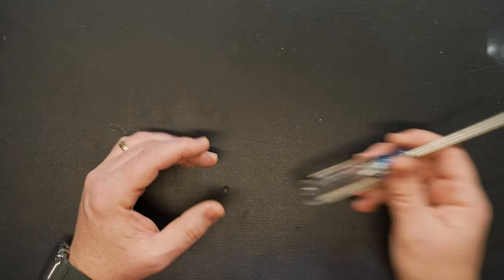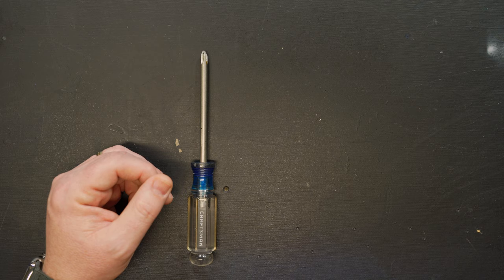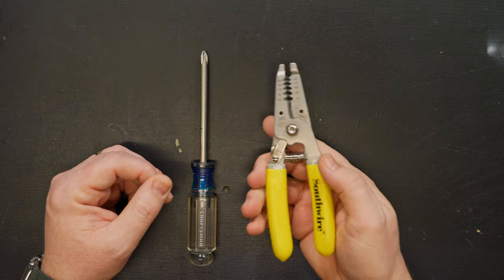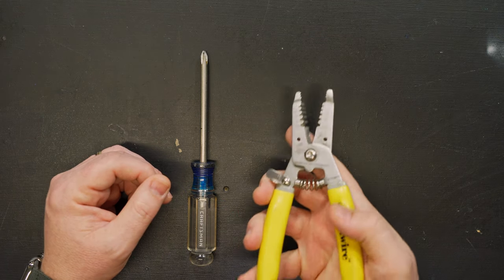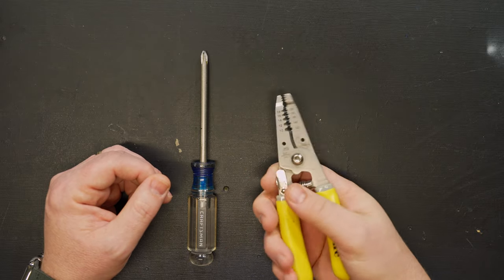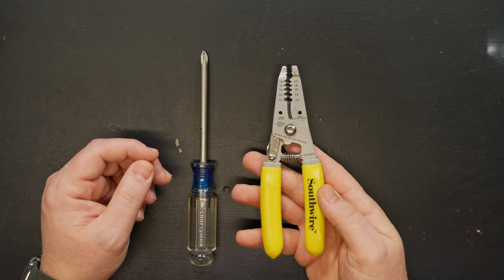All right let's talk about the tools we're going to need for this project. The first is a Phillips screwdriver, nothing special just a basic Phillips should work just fine. Next you're going to need a pair of wire cutters and strippers. Now if you don't already have a pair like this then I highly recommend you just go ahead and invest in a pair. They're really useful to have around the house for household electrical work and they're really not very expensive.